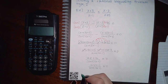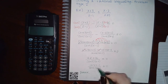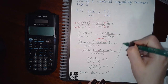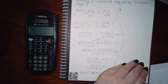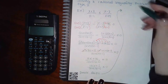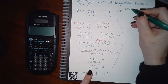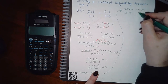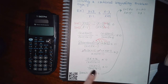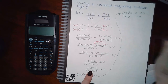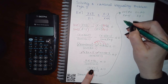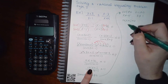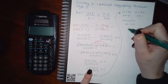We have to consider our domain first. The denominator cannot equal 0, which means x plus 5 cannot equal 0 and x minus 1 cannot equal 0 — so x cannot equal negative 5 and x cannot equal positive 1. Then we find points of interest from the numerator: 12(x plus 1) equals 0, which gives x plus 1 equals 0, so x equals negative 1.